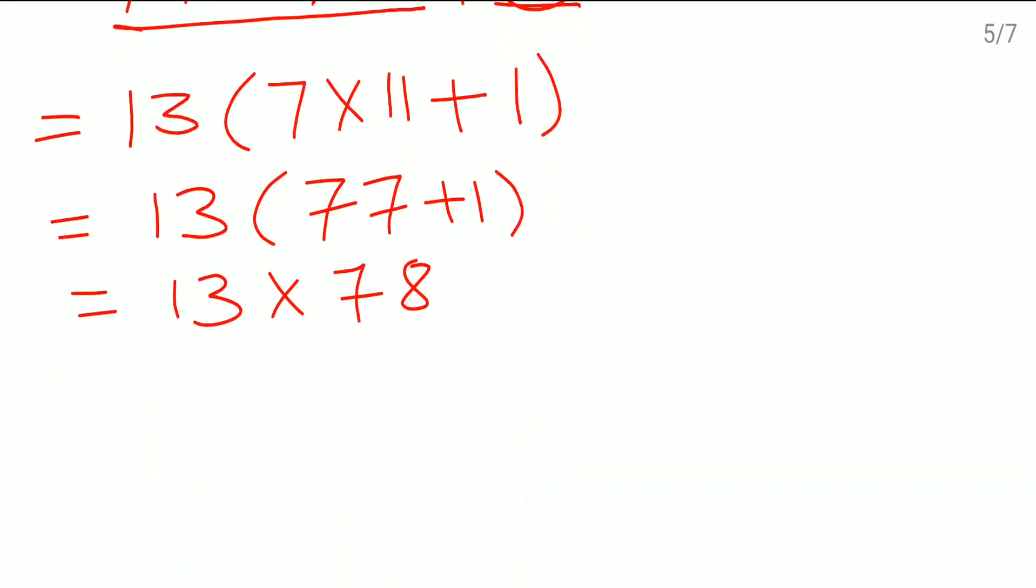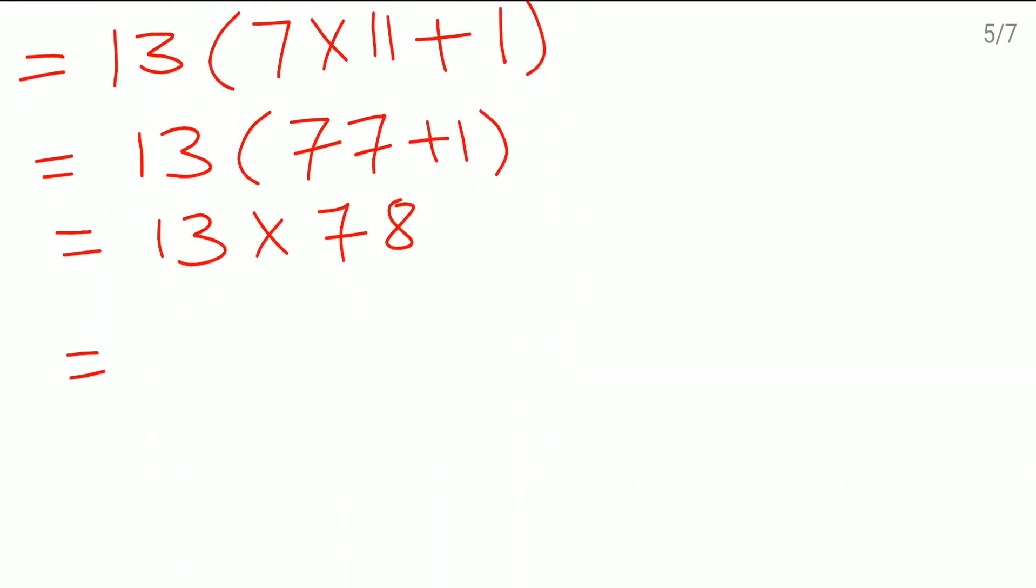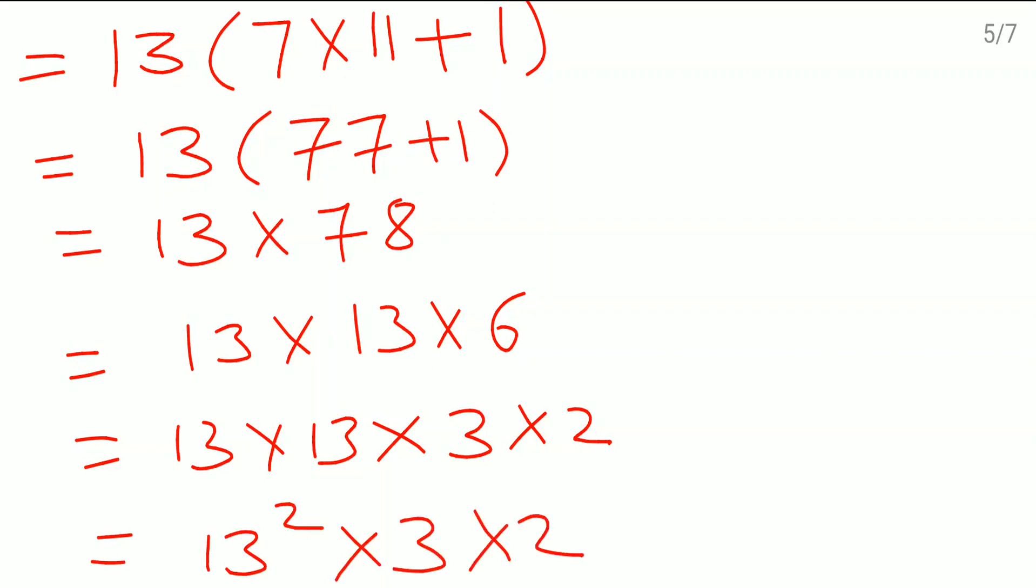But 78 also we can split. So here 13 into 13 into 6. We can write down 3 into 2 format. So here itself you see we are having more than two factors. Or you can say 13 square into 3 into 2. So this number has more than two factors. Therefore it is a composite number.